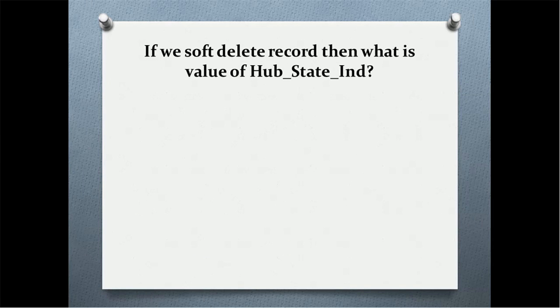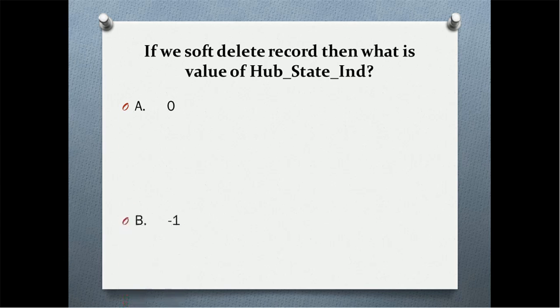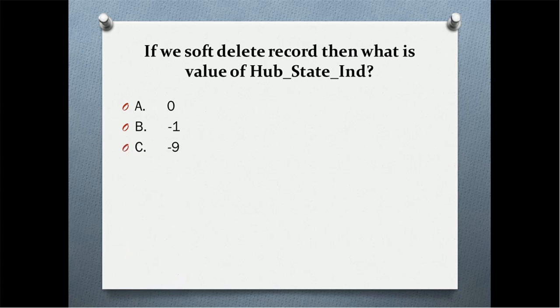If we soft delete a record, then what is the value of the hub state indicator? Option one: hub state indicator will be zero if record is soft deleted. Option two: hub state indicator will be minus one. Option three: hub state indicator will be minus nine if record is soft deleted. The correct answer is minus one.